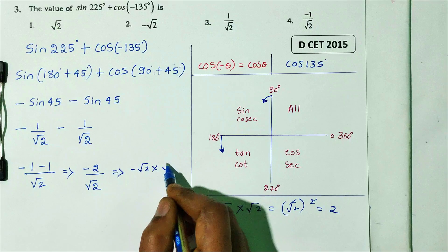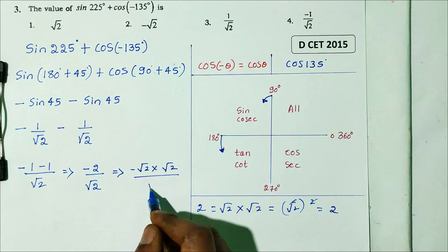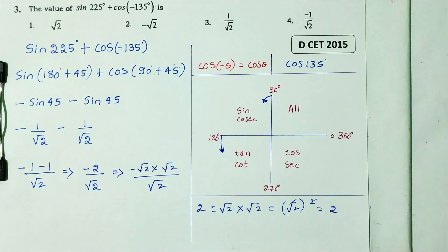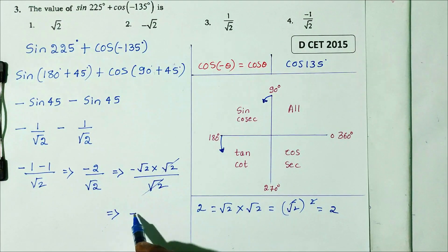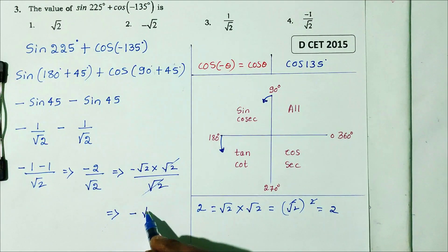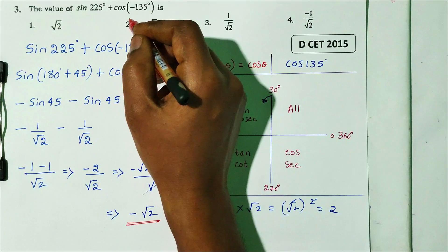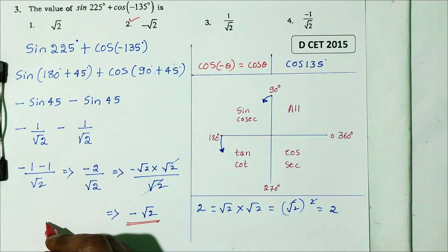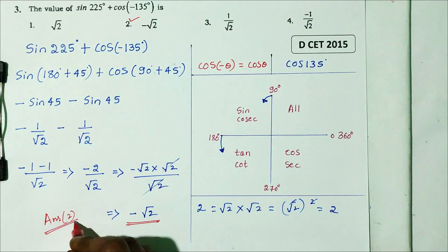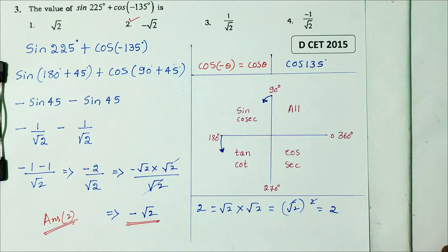Adding: minus 1/√2 plus minus 1/√2 = minus 2/√2. Simplifying by multiplying: the root 2 terms cancel to give minus √2, but rationalising gives minus 1/√2 × 2 = minus √2/2. The answer is minus 1/√2, so option 2 — minus 1/√2 — is the right answer for this DCT 2015 question.